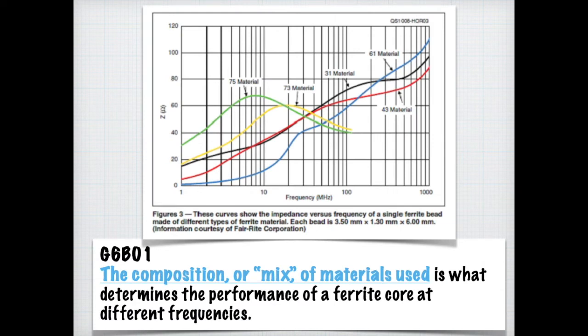Earlier, we mentioned that the type of material used in a core can affect its behavior. For the exam, you need to know that the composition or mix of materials used is what determines the performance of a ferrite core at different frequencies, as illustrated by this chart. You can see that material 75 has a totally different behavior than, say, material 45 or material 61.